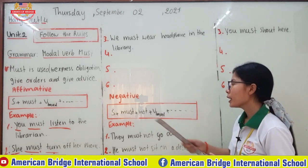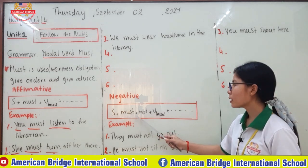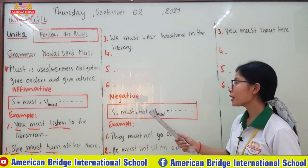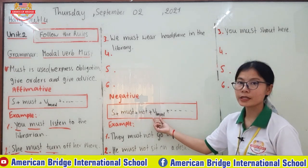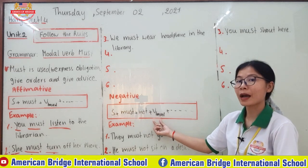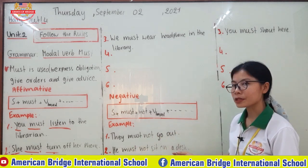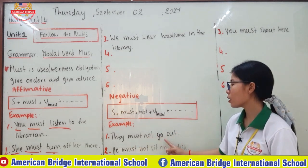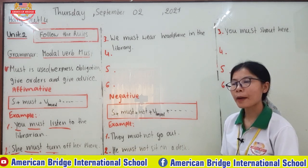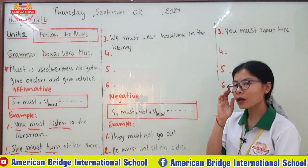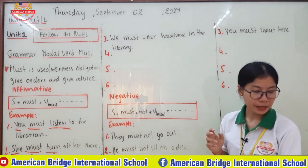Now let's go to the negative form: subject + must + not + verb base. In the negative form, you just put 'not' between 'must' and the verb base — that is enough to make it negative. For example: 'They must not go out.' And there is no short form for 'must not' — we don't have any contraction.